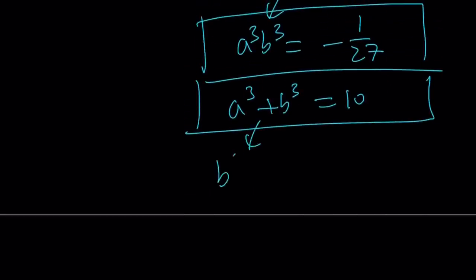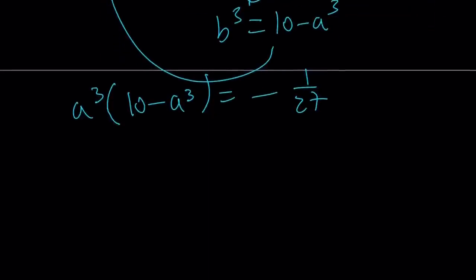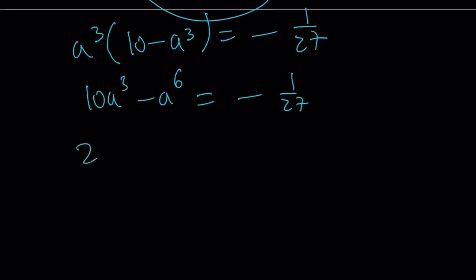So let's go ahead and do the following. Replace b³ with 10 - a³. And then go ahead and substitute that into the first equation. That gives us a³(10 - a³) = -1/27. I know this doesn't look very good, but don't worry, we're going to simplify this. And if you distribute, you get 10a³ - a⁶ = -1/27. Let's just multiply both sides by 27 to get rid of the fraction. 270a³ - 27a⁶ = -1.